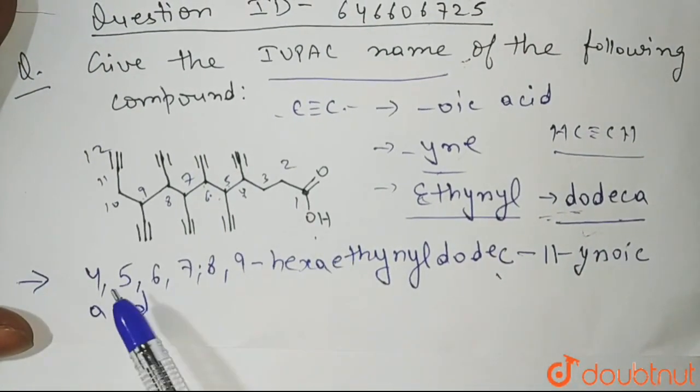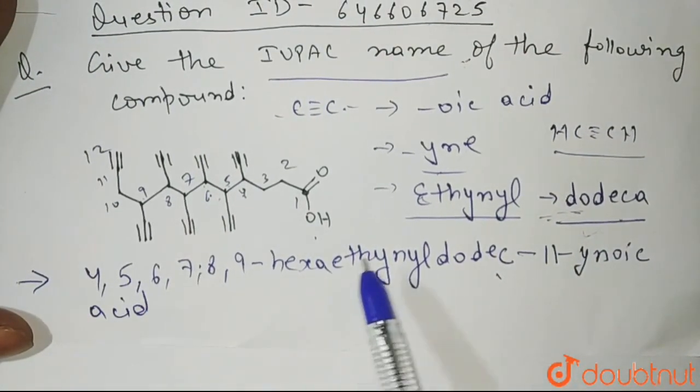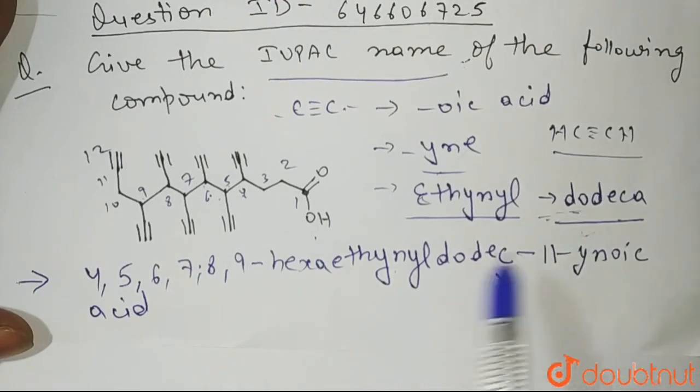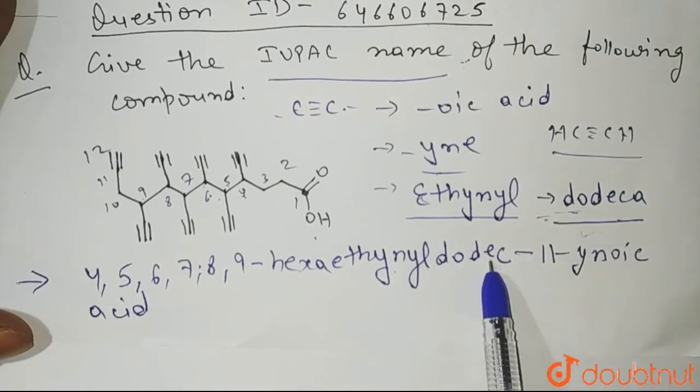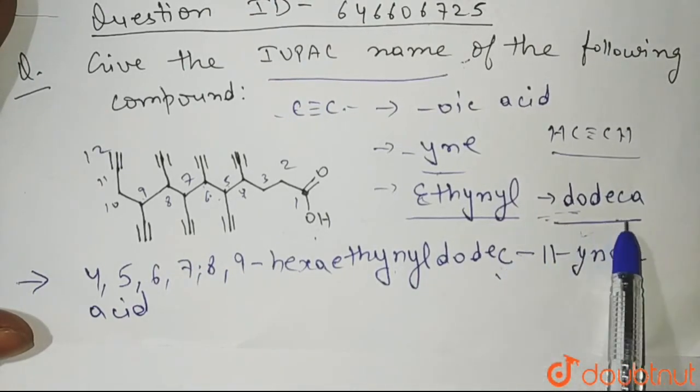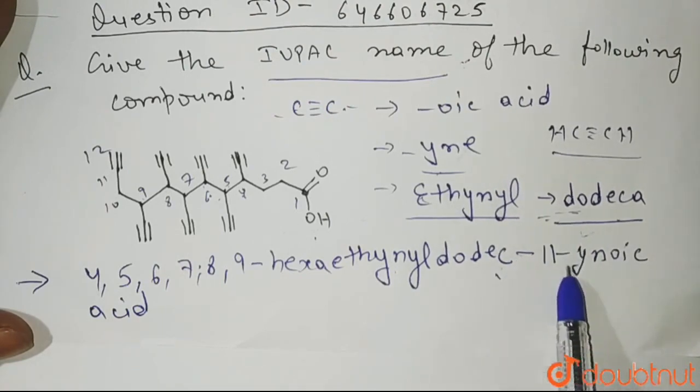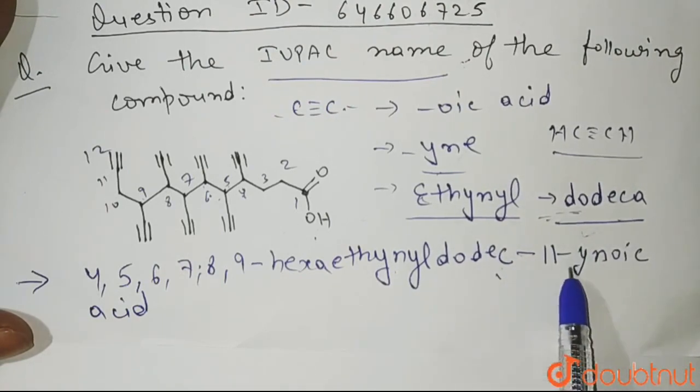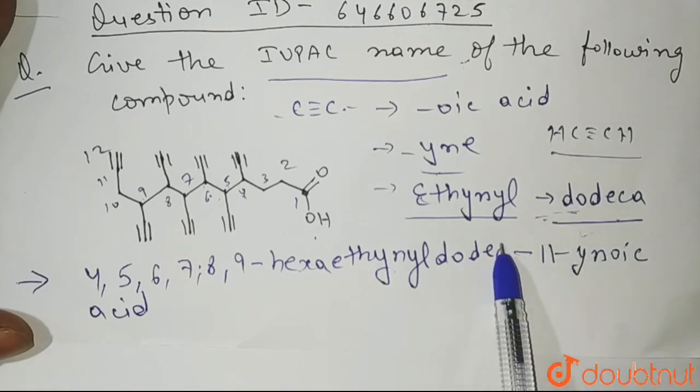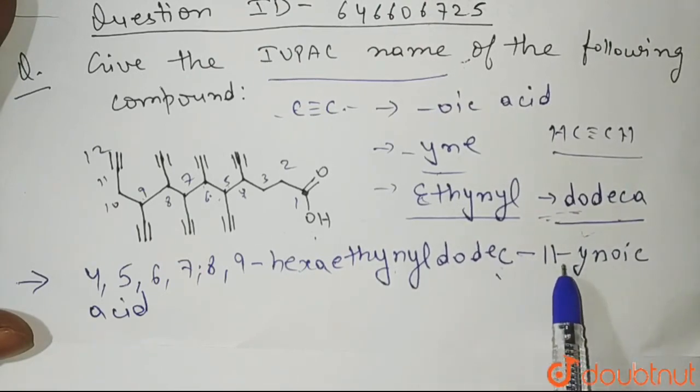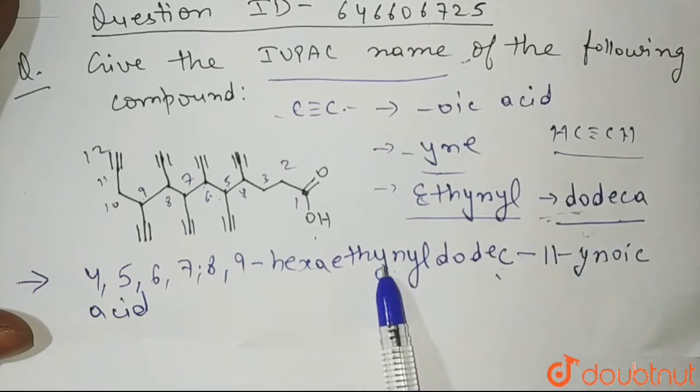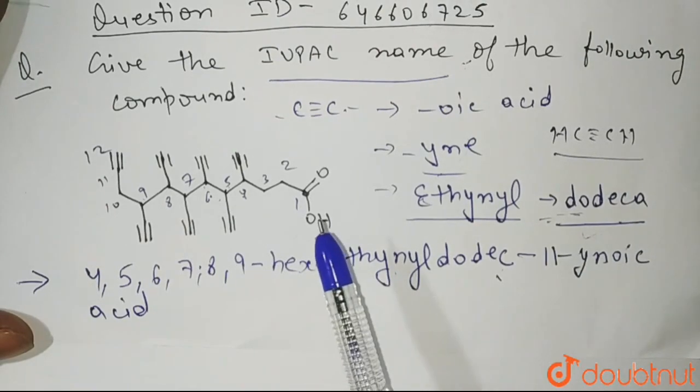So this is the name. That is 4, 5, 6, 7, 8, 9, hexa ethynyl dodeca 11 ynoic acid. After dodeca, A will be removed here, why? Because Y is coming. So that's why A will be omitted. And we will write dodeca 11 ynoic acid. So this will be the IUPAC name of this compound.